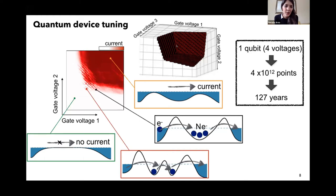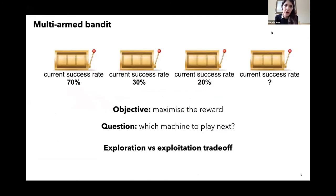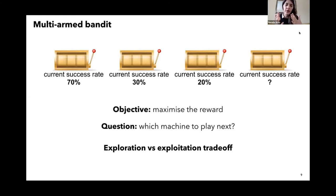We've been thinking about techniques to address this problem — to be able to tune these devices completely automatically without human input. We realized that this problem is quite similar to the multi-armed bandit problem. You can imagine a gambler and a row of slot machines: the objective is to maximize reward, and the question is which machine to play next. I know the current success rate of a few machines — I could go to the one with 70% success rate, or I could explore another machine I don't know. This is known as the exploration versus exploitation trade-off.